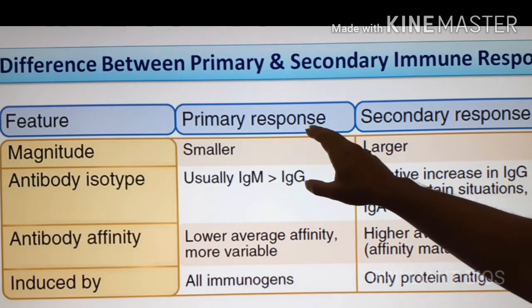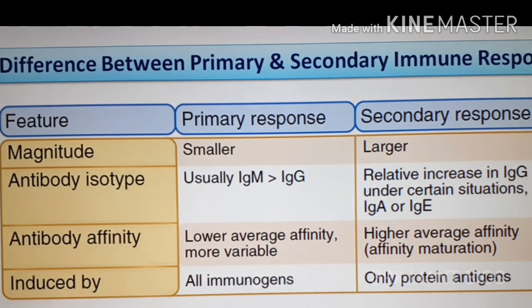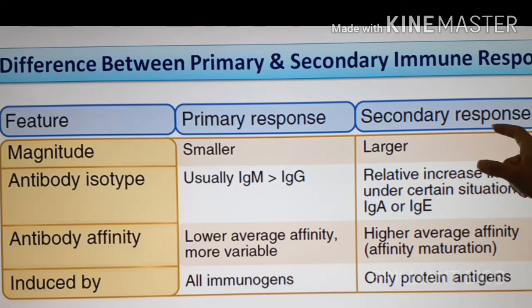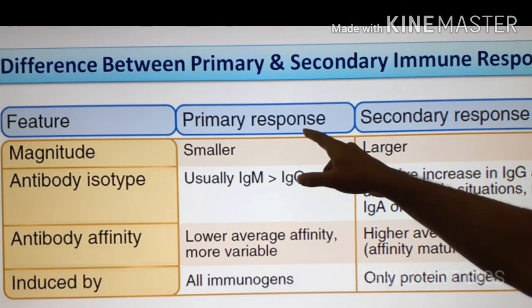Primary immune response can be induced by all immunogens — immunogens are antigens that can induce an immune response — including proteins, carbohydrates, lipids, or nucleotides. In contrast, secondary immune response can only be induced by protein antigens. Thymus-dependent antigens, which are protein in nature, can develop a secondary immune response, while both thymus-dependent and thymus-independent antigens can induce primary immune response.